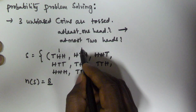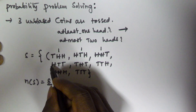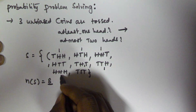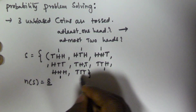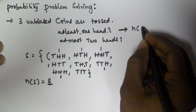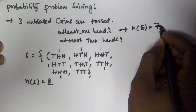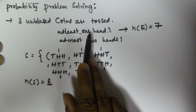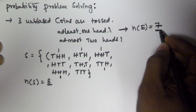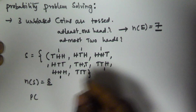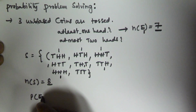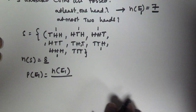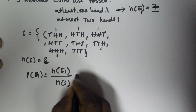The outcomes which contain at least one head are numbered: one, two, three, four, five, six, and seven. This one contains no head. So at least one head contains n(E) = 7. The probability of E1 is equal to n(E1) by n(S), so that is going to be 7 by 8.